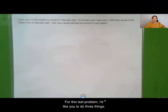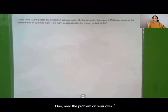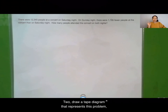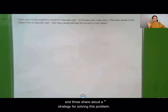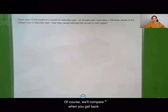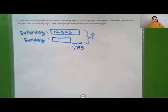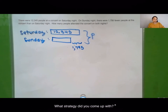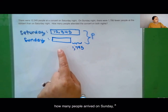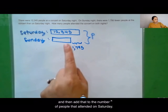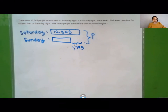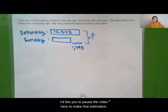For this last problem, I'd like you to do three things: one, read the problem on your own; two, draw a tape diagram that represents this problem; and three, share aloud a strategy for solving this word problem. We'll compare when you get back. Here's my tape diagram. I was thinking we can first determine how many people arrived on Sunday and then add that to the number of people that attended on Saturday. Now pause the video to estimate the solution, sharing your reasoning aloud. We'll compare estimations afterwards.